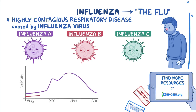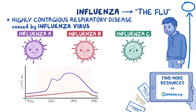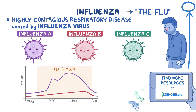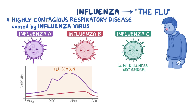Influenza types A and B are responsible for the annual regional flu epidemics, or the flu season, which is when cases of influenza rise and spans from about September to April, with peaks around December to February. On the other hand, influenza C may lead to mild illness, but not epidemics or pandemics.